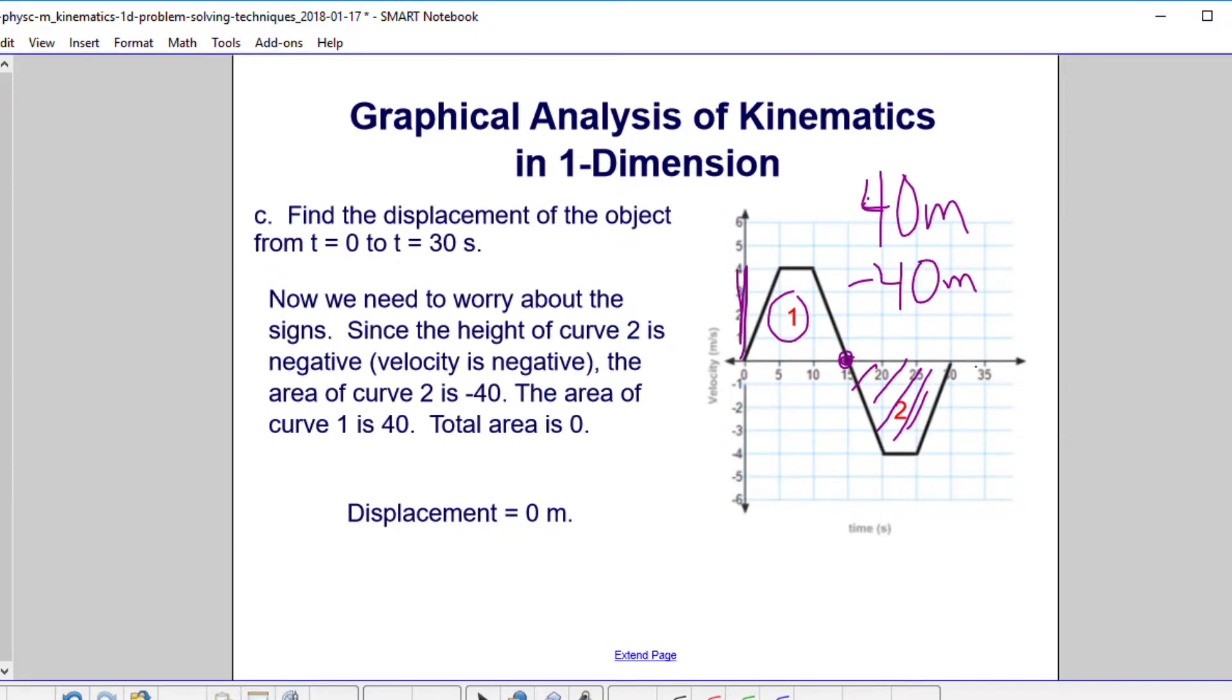Then what happened? We turned around and started heading with a negative velocity. So we're heading back to where we started from and we covered this distance, which is actually a displacement of negative 40 meters. Our total displacement will be zero. We're back where we started from. Displacement is zero meters.